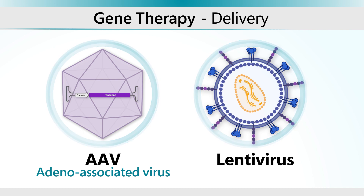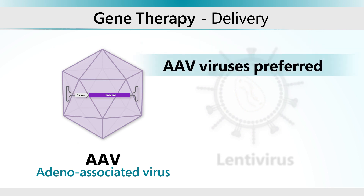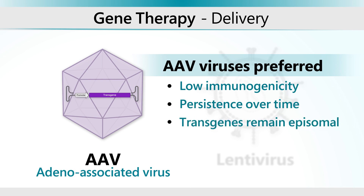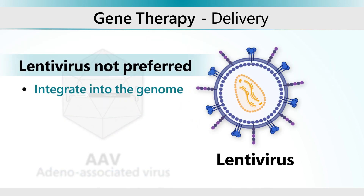In comparison to lentiviruses, AAV viruses are preferred because of their low immunogenicity, ability to persist for a long period of time, and the fact that transgenes remain primarily episomal in nature. In contrast, lentiviruses integrate into the genome, occasionally causing errors in other genes.